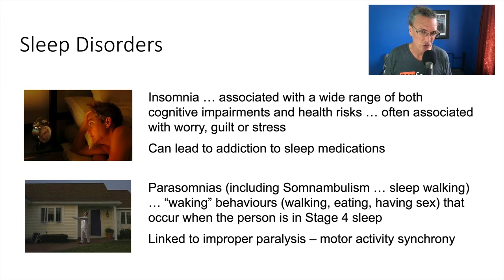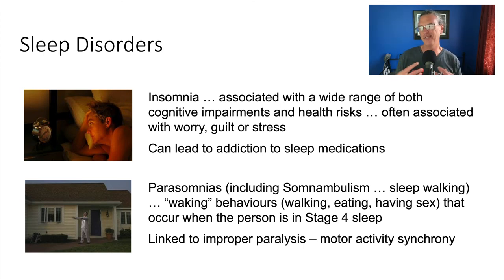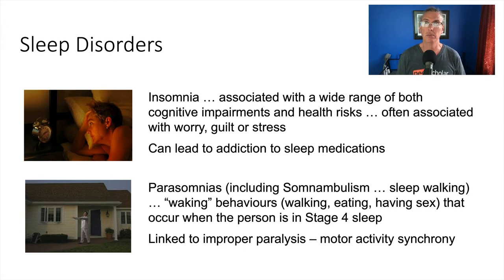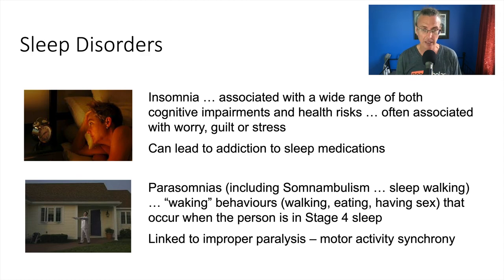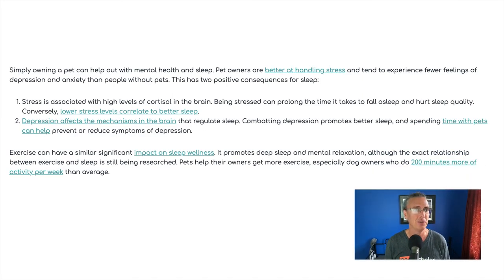The brain paralyzes the body, so our minds imagine our bodies doing things but the body stays still. Sometimes we feel that paralysis in our dreams — we feel really slow, can barely move, or feel a weight on our chest. There are also times when people wake up and the paralysis is still there briefly — they wake up and think they're paralyzed, which freaks them out. With parasomnias, sometimes this mechanism isn't working quite right, so people essentially act out their dreams.